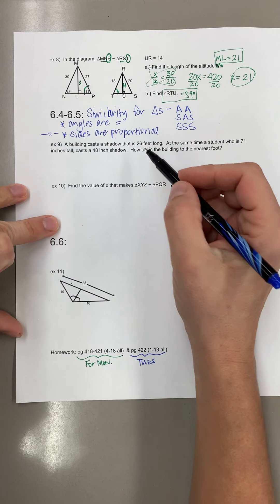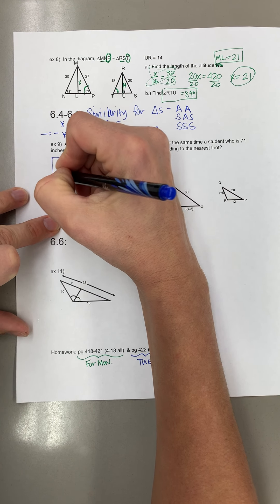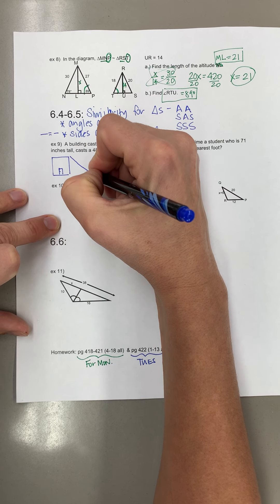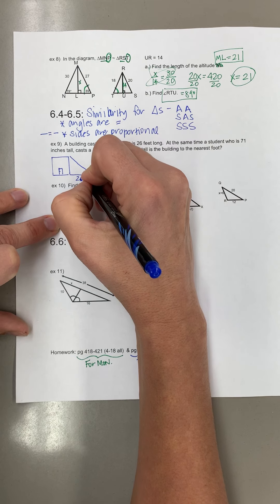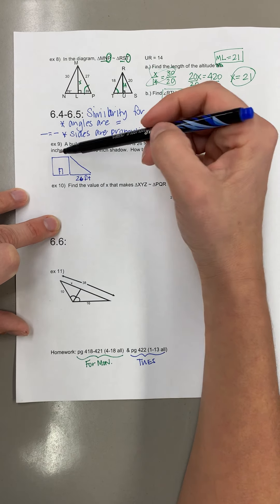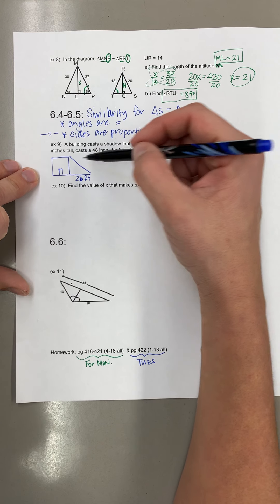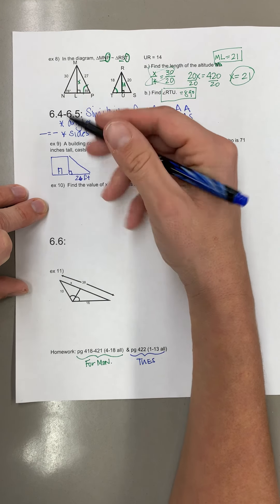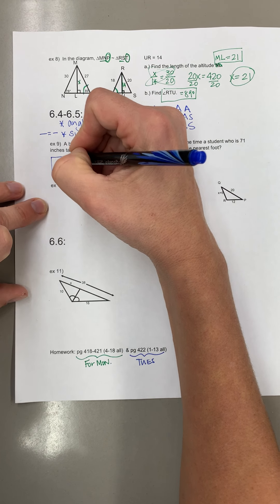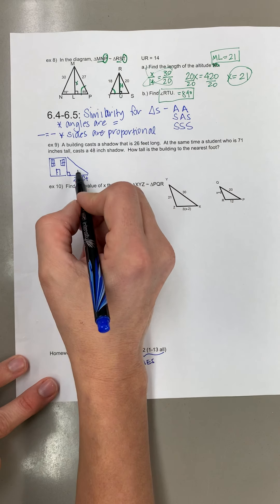Now in this problem we haven't, I don't know that we've actually done many like this. So it says a building casts a shadow that's 26 feet long. So I'm going to draw a building and cast a shadow that's going to be 26 feet long. And you know how shadows work, it's basically the sun's over here and so this is black. So this is shadow. And this is going to be a right angle because the building should be standing up tall.